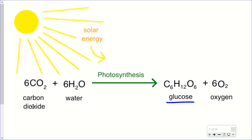Hello everyone. This lesson is going to be on the wonderful topic of photosynthesis. Photosynthesis, of course, is taking place inside of the chloroplast of plants, and what is really going on in the chloroplast is an energy transformation, where plants are taking one form of energy — solar energy or light energy — and converting it into another form of energy, which is chemical energy.